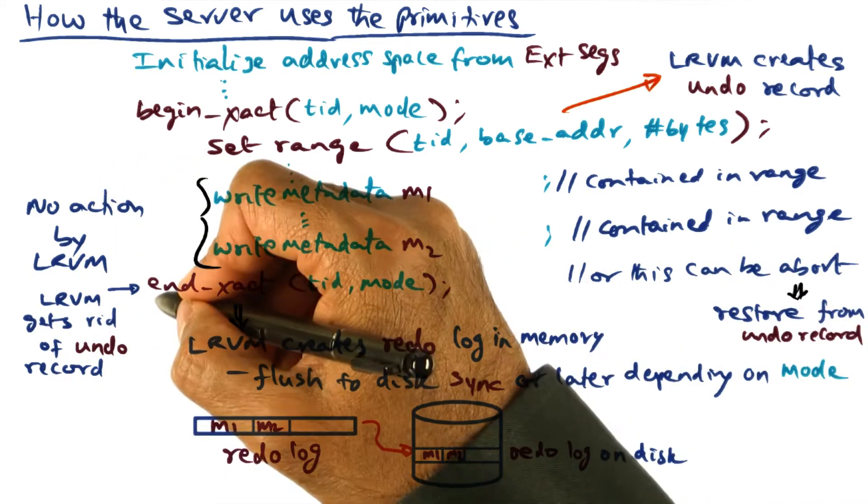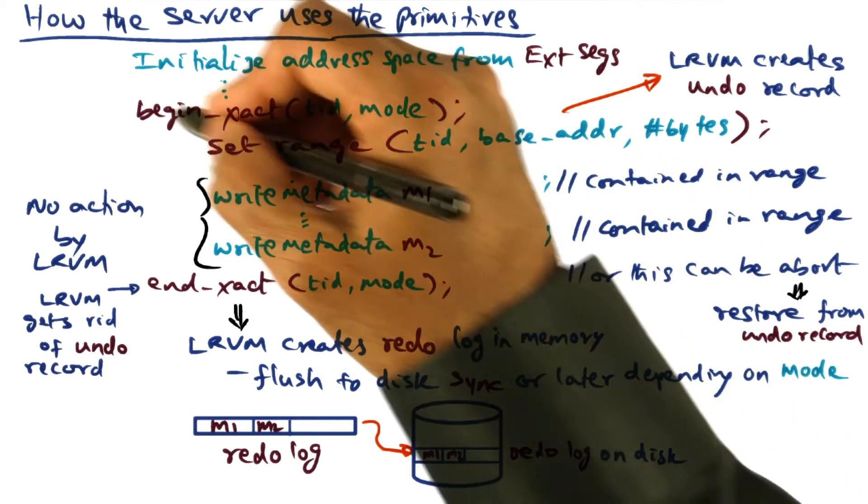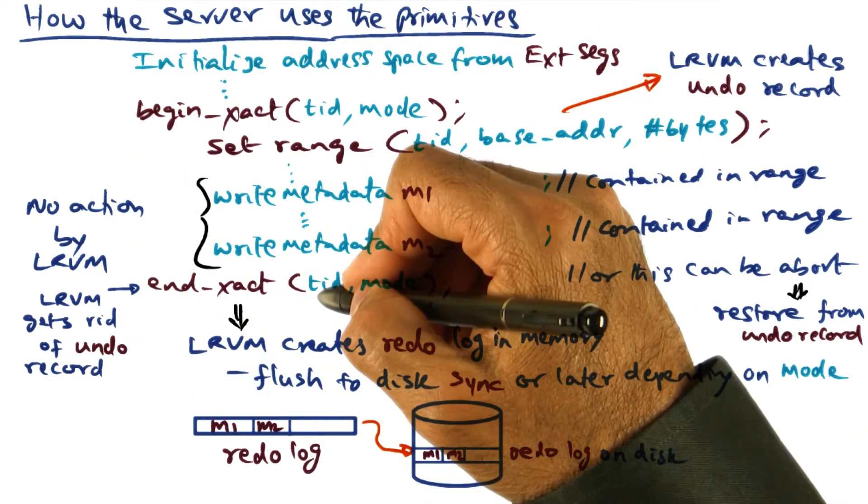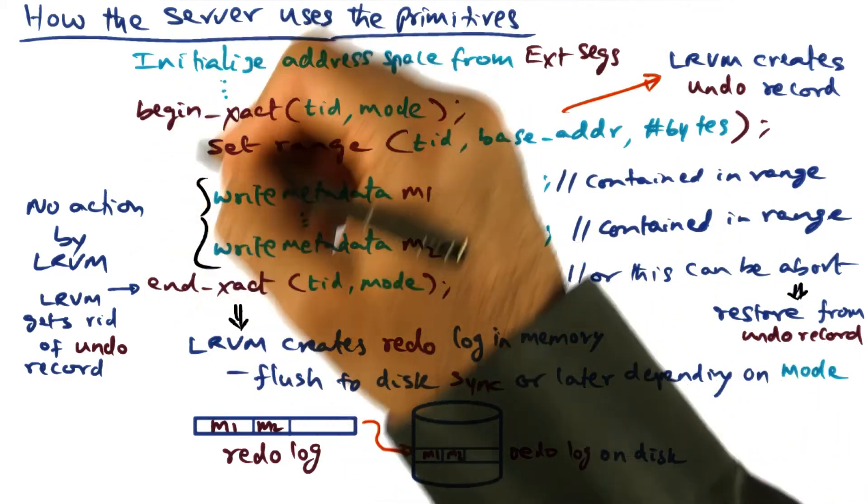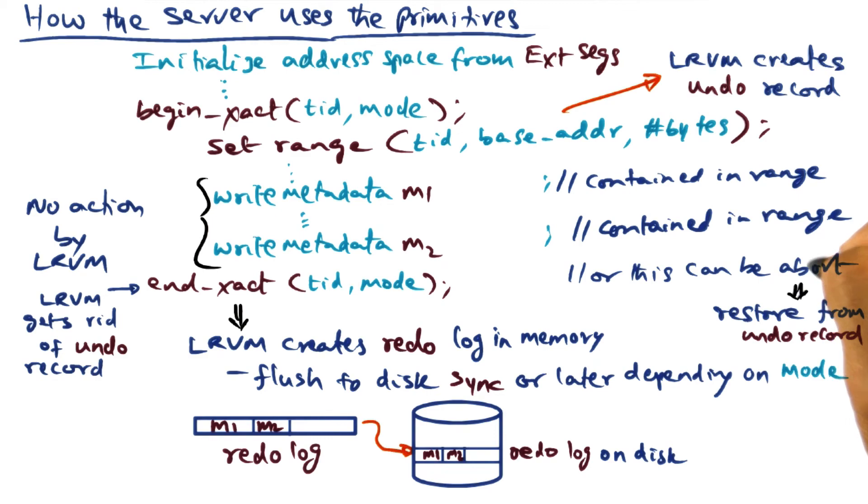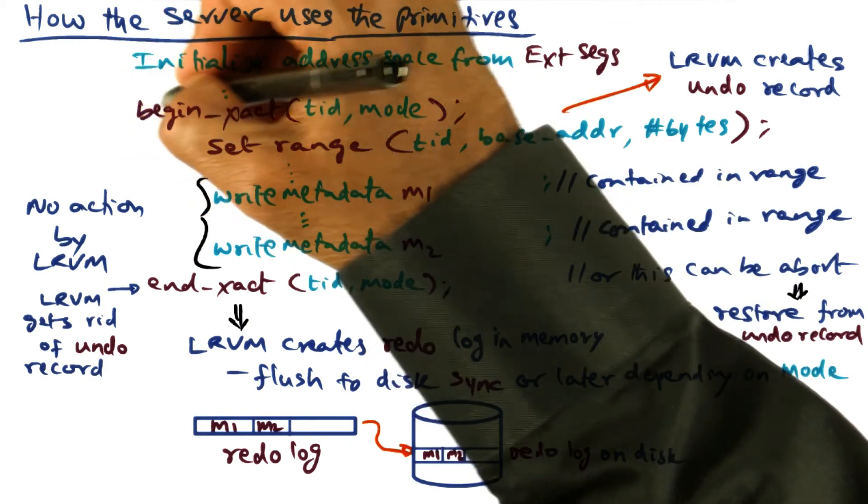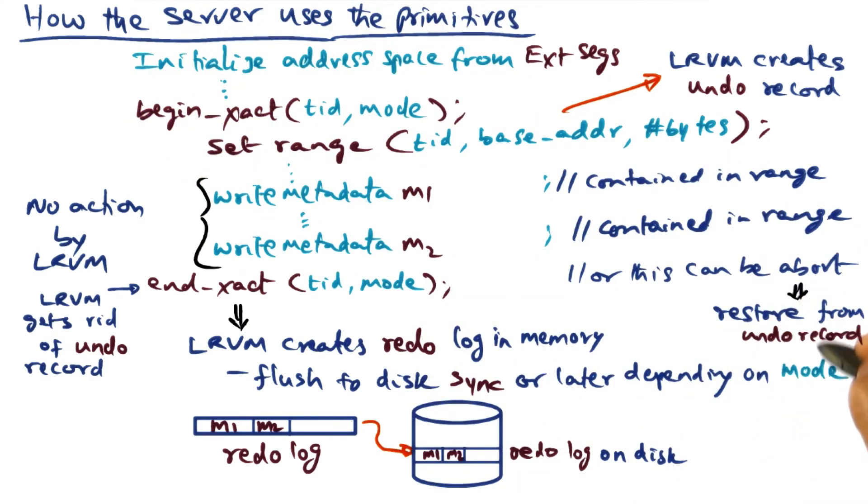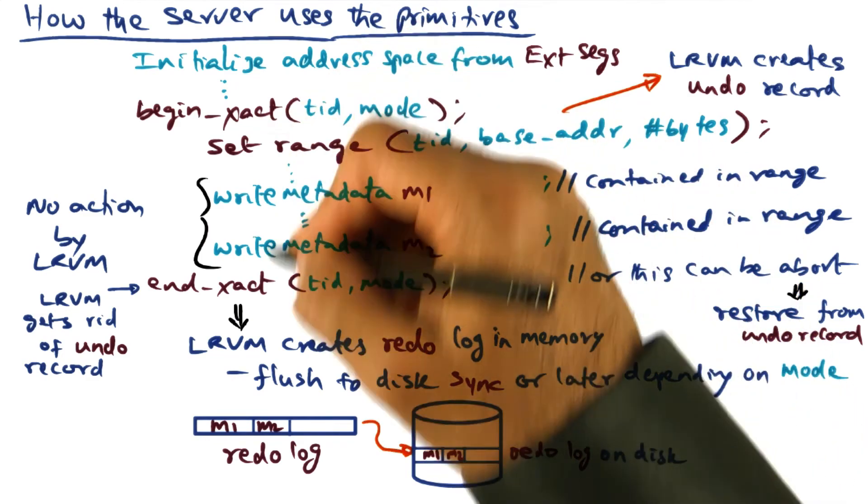On the other hand, instead of the end transaction, the transaction may actually abort. If it aborts, then what LRVM has to do is restore this portion of the virtual address space of this process from the undo record so that we have gone back to the state before this transaction ever happened. So in other words, we're making whatever code that the server executed as a critical section code between begin transaction and abort transaction to go away. And we restore the computation to its state before the begin transaction by copying the undo record into the portion of the virtual address space that has been modified through this critical section code.